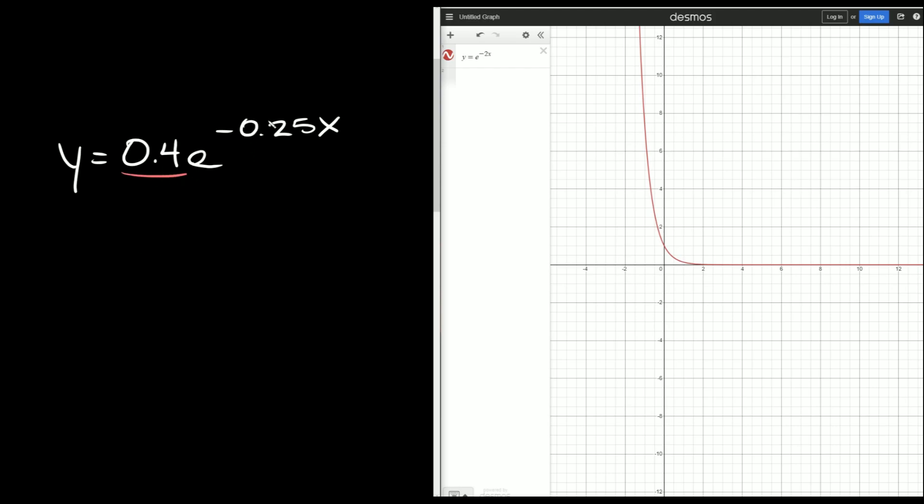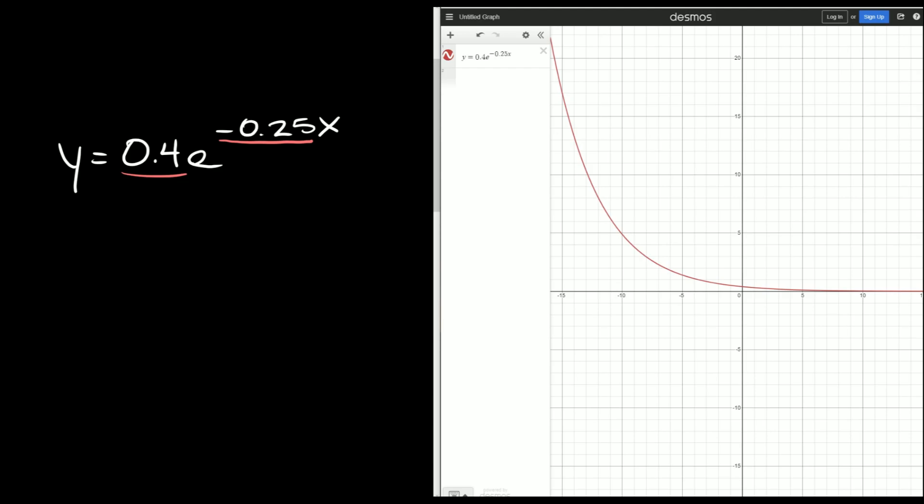And then the number we really care about is our r number. So here you can see it's negative, so this will indicate exponential decay. So then if we look at the graph one more time over here, I already inputted it into the calculator, so you can see it does show exponential decay.